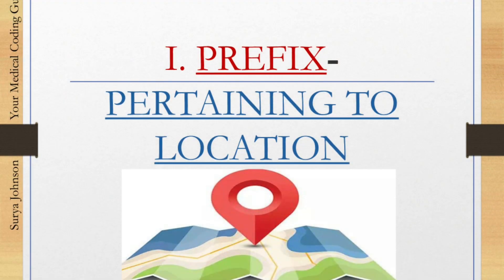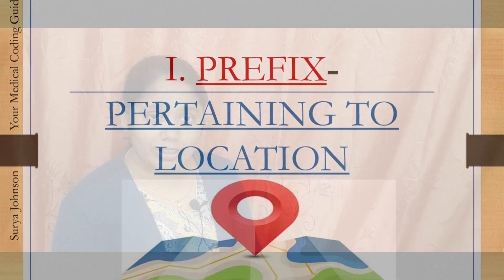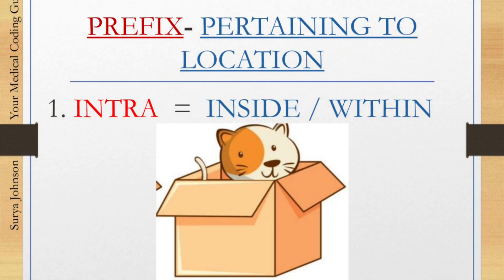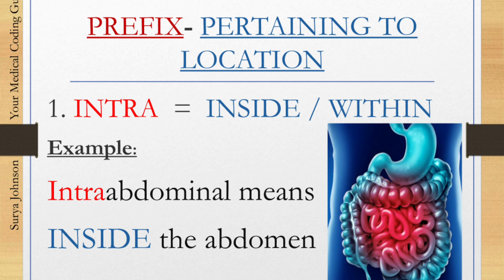So the first one — prefixes pertinent to location. We should know this concept because without these prefixes you will not understand where the exact problem is: is it inside, outside, or around. The first one is 'intra.' Intra means inside or within. For example, intra-abdominal means inside the abdomen.